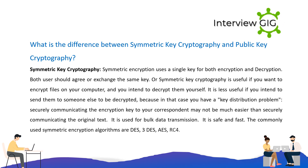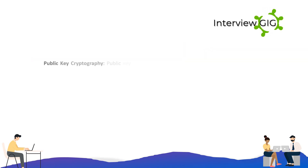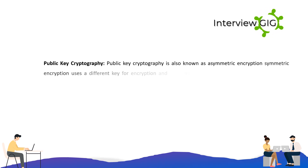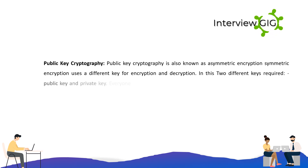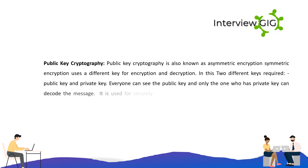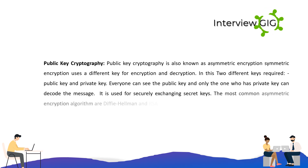The commonly used symmetric encryption algorithms are DES, 3DES, and RC4. Public key cryptography is also known as asymmetric encryption. It uses a different key for encryption and decryption. Two different keys are required: a public key and a private key. Everyone can see the public key, and only the one who has the private key can decode the message. It is used for securely exchanging secret keys. The most common asymmetric encryption algorithms are Diffie-Hellman and RSA.